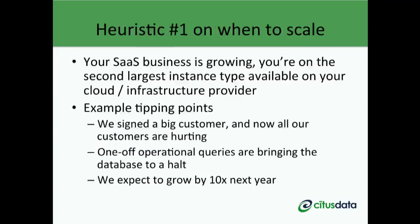We've seen hundreds of customers looking to scale out their Postgres databases at Citus. I compiled three heuristics to share — think of them as general guidelines, not hard rules. The first one is: if your business is growing and you're on the second largest instance type on your cloud provider, you probably want to start thinking about scaling out. Being on the second largest gives you breathing room to grow while you plan for sharding.